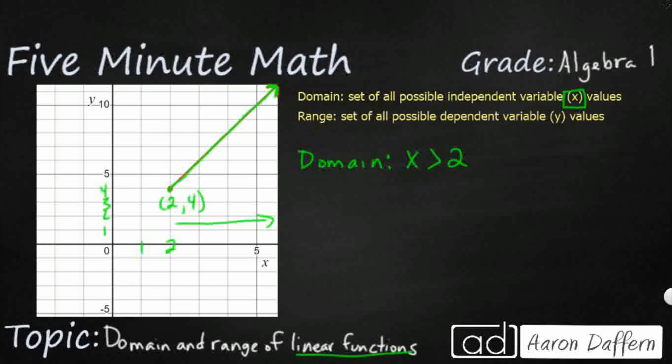It never gets less than 2. Since this is a closed circle, we actually need to make this greater than or equal to 2, because we're going to include 2 in the domain set. If it was an open circle, then we would just say greater than 2.